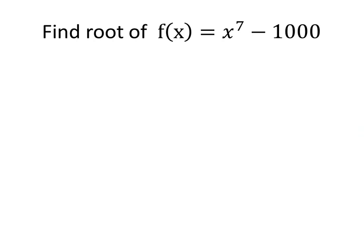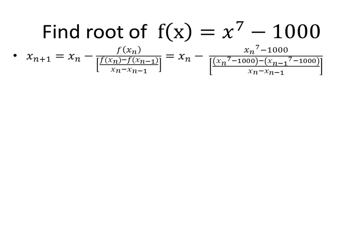Here's another example. Let's try to find the root of the function x to the 7th minus 1,000. We'll go ahead and replace f(x) with x^7 - 1,000 and plug it into our Secant method. And we'll also pick x1 to be 2 and x2 to be 3.